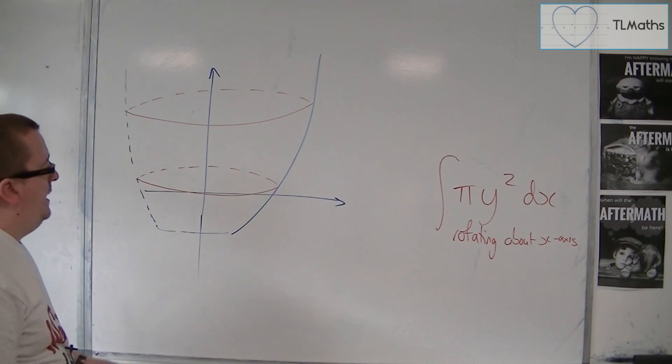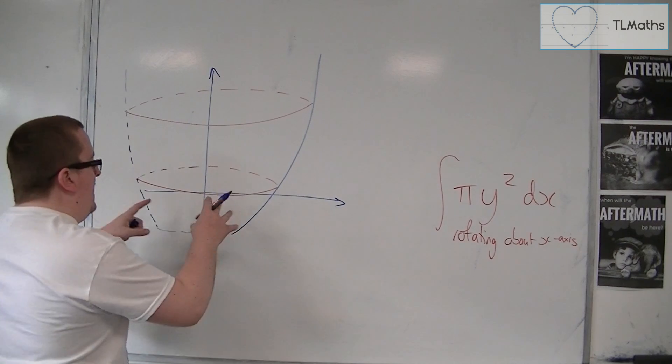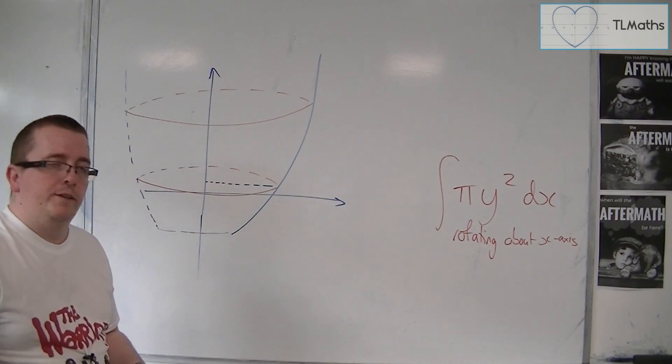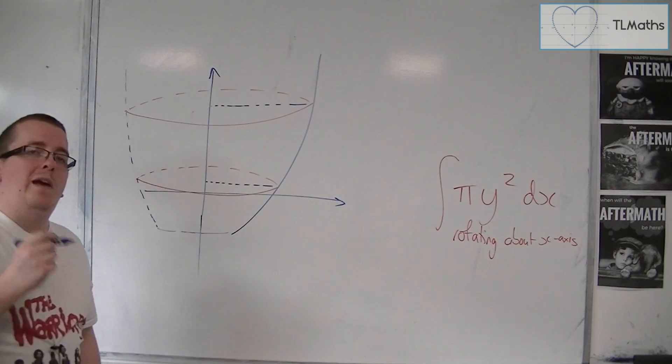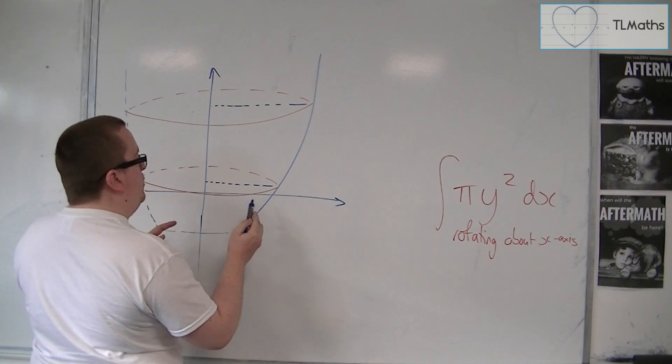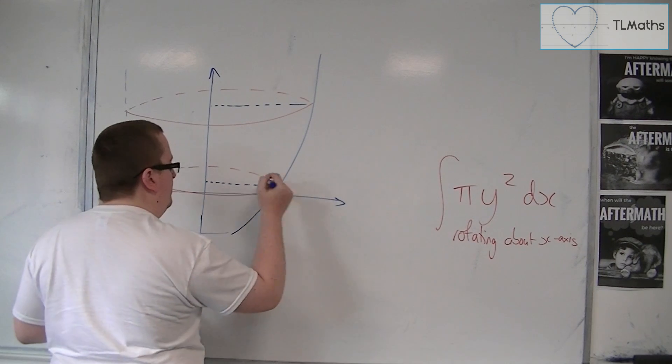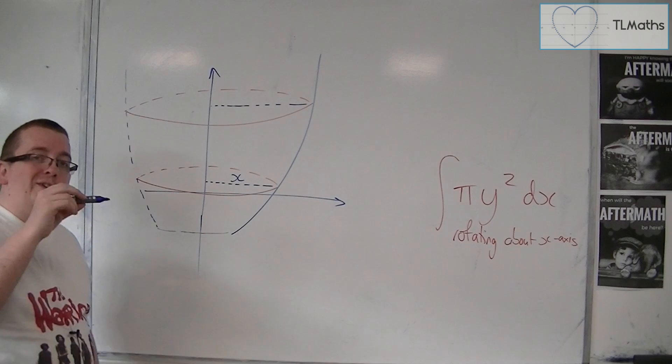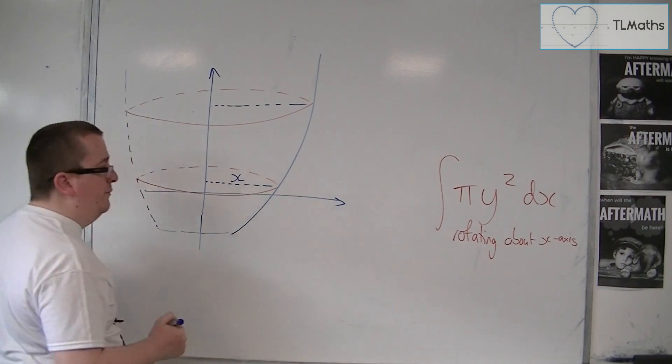What you'll find is that now, each of those radii, for each of the circles, no longer depends on the value of y, but it actually depends on the value of x, where I am along the x-axis. Each of those will have a radius of x, and it changes depending on where you are on the curve.